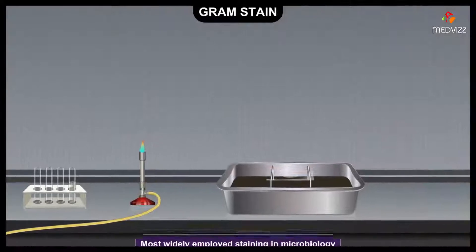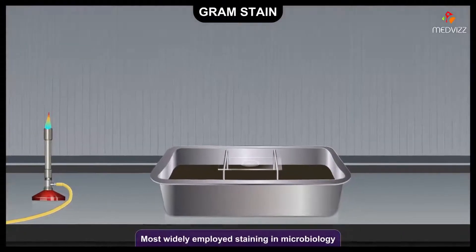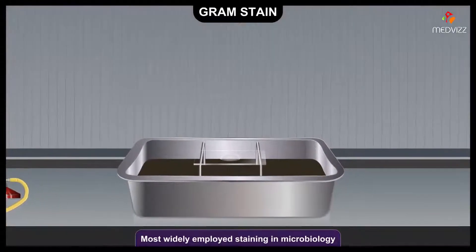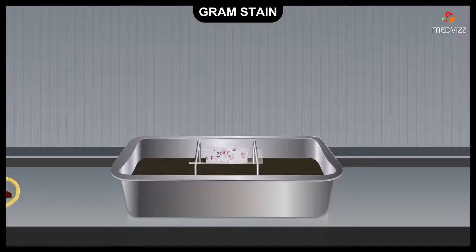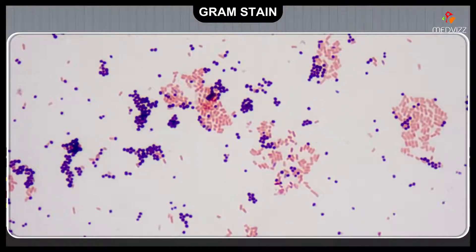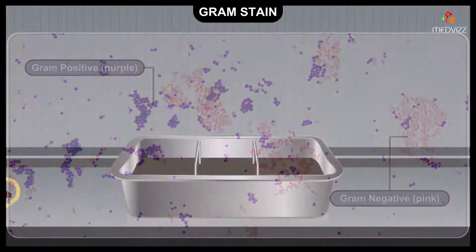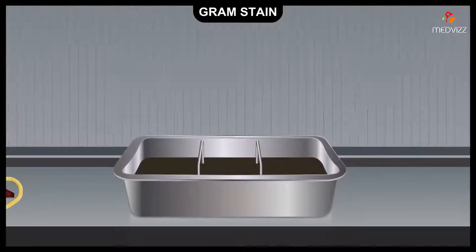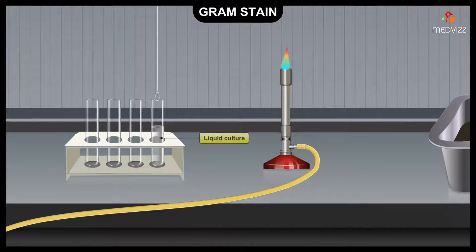The Gram stain is the most widely employed staining method in microbiology. It is a differential stain because it divides bacteria into two classes: Gram positive and Gram negative.